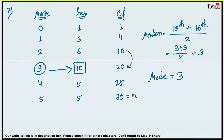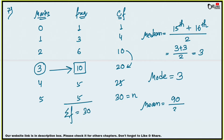Now find the mean using the formula: mean = Σfx ÷ Σf. Calculate fx: (0×1) + (1×3) + (2×6) + (3×10) + (4×5) + (5×5) = 0 + 3 + 12 + 30 + 20 + 25 = 90. Divide by Σf = 30, giving mean = 90 ÷ 30 = 3.